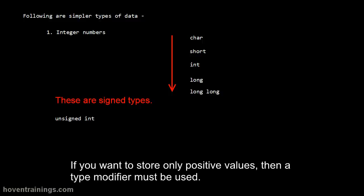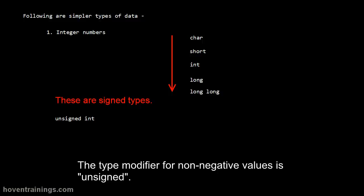If you want to store only positive values, then a type modifier must be used. The type modifier for non-negative values is unsigned.